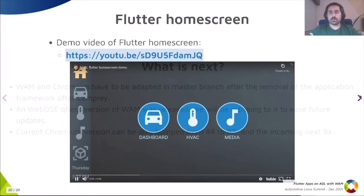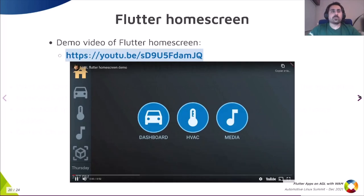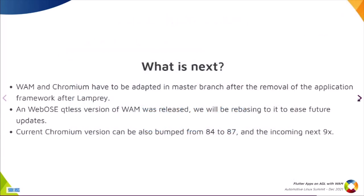What is next? There are a lot of things ongoing. WAM and Chromium are being adapted in the master branch after the removal of the application framework happening after Lamprey. There's quite some work to adapt the functionality. We are also working on bringing up the cutless version of webOS WAM that was released recently, which could make it easier to get updates. We are also bumping the Chromium version from 84 to 87 and the incoming 9x series coming soon.